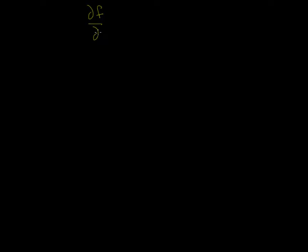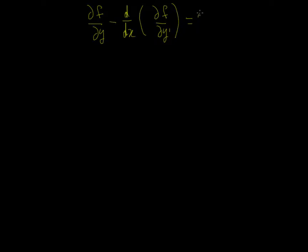Welcome back to video number 7 in our series on the Calculus of Variations. In the last video we derived the Euler-Lagrange equation, which can be written as: partial f by partial y minus d/dx of partial f by partial y' equals zero.